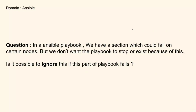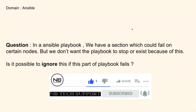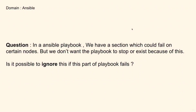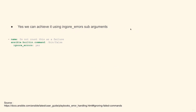In an Ansible playbook, we have a section which could fail on certain nodes, but we don't want the playbook to stop or exit because of this. Is it possible to ignore this part of the playbook failure and continue? The answer is yes — we can do this by using an argument called ignore_errors. I've picked an example from the official documentation: you can see that we are running a particular command, and if it fails it will be ignored.